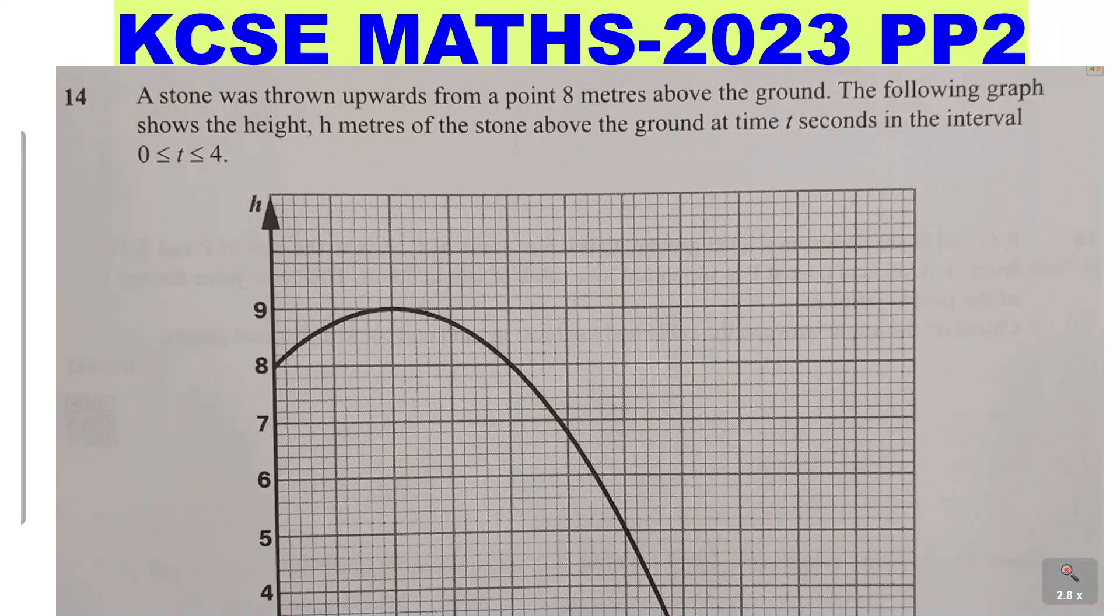Question 14. A stone was thrown upwards from a point 8 meters above the ground. The following graph shows the height h meters of the stone above the ground at time t seconds in the interval 0 ≤ t ≤ 4.